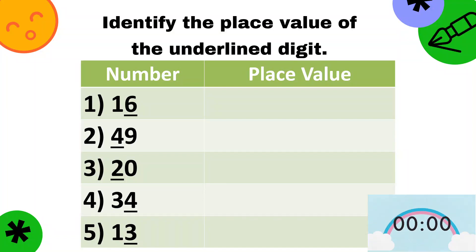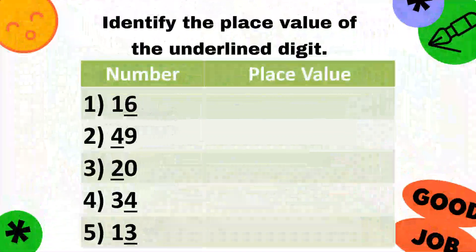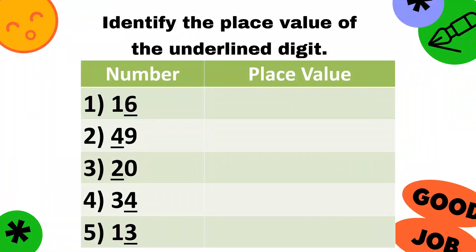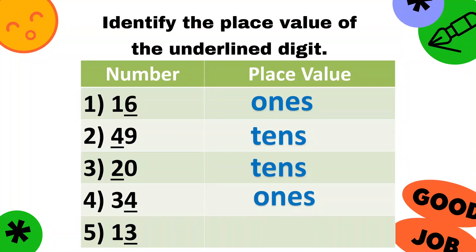All right, time is up. Let's check. For number one, the place value is ones. For number two, tens. For number three, tens. Number four, ones. And number five, ones. Great job!